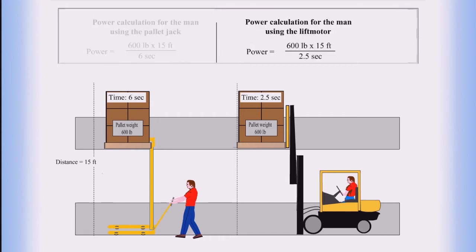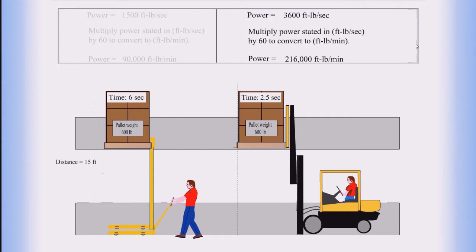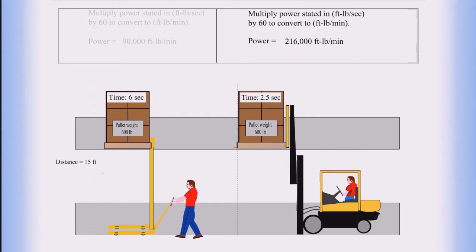The power calculation for the man using the lift motor is power equals 600 pounds times 15 feet divided by 2.5 seconds, so power equals 3,600 foot-pounds per second. Multiply power stated in foot-pounds per second by 60 to convert to foot-pounds per minute, so power equals 216,000 foot-pounds per minute.